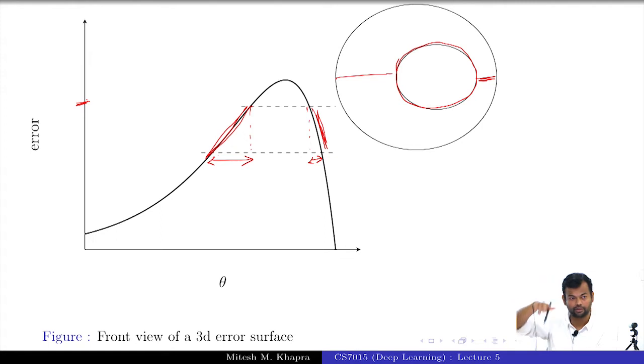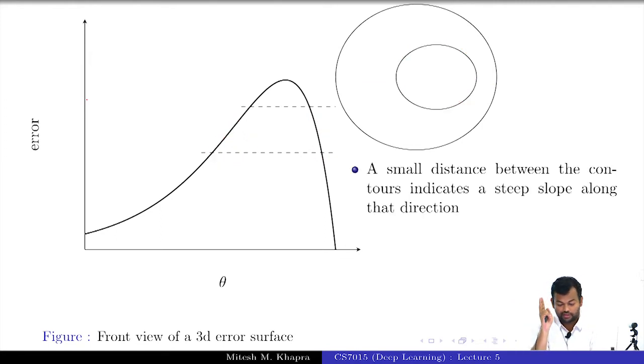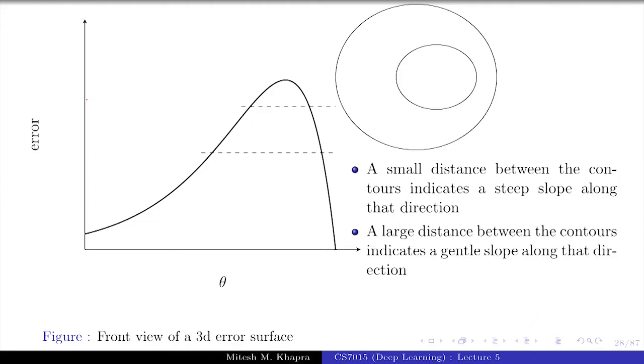So there are only two things that you need to understand if you want to read contour maps. One is: a small distance between the contours indicates that a steep slope exists along that direction, and a large distance between the contours indicates that a gentle slope exists along that direction. So everything today is going to be about steep and gentle slopes. And the other thing that you need to know is that whenever you see one circle, the error is the same along that circular ellipse or whatever boundary that you see. The error is the same because you're taking these vertical slices. So we are ready with this rule. Everyone understands this perfectly?